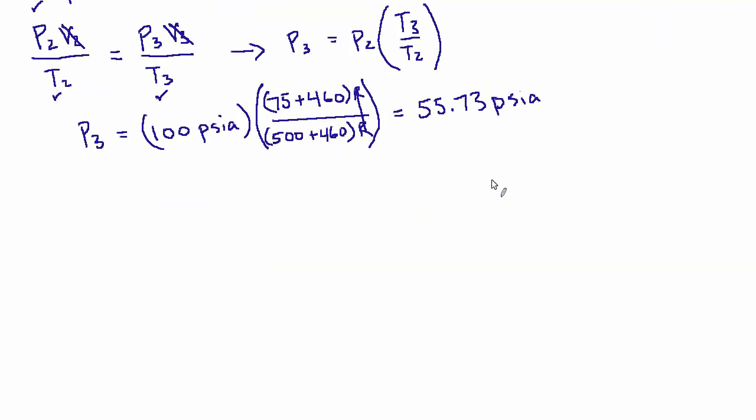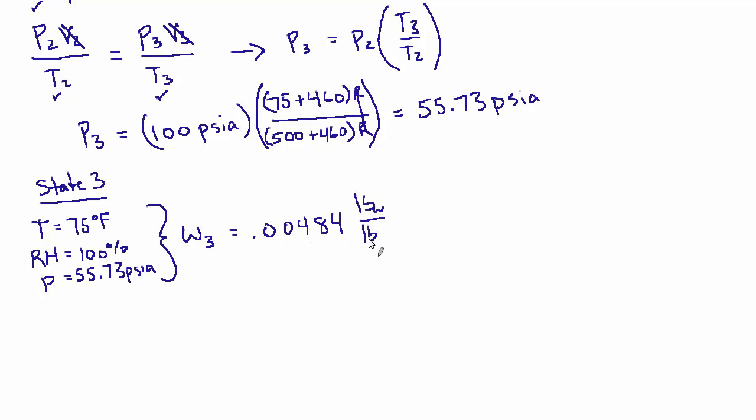So now what do we know about state three? We know three things. And I'm going to do what I did before and use those three things to use the psychrometric calculator and get the answer first. And then we'll do it some manual way. So after we get an answer, we can check it against what the psych calculator said. So let's restate what we know about state three, 75 degrees Fahrenheit, a relative humidity of 100% because it's saturated. And we just found the pressure to be 55.73 PSI. So based on those three facts, we can plug it in and get the humidity ratio, which is 0.00484 pounds of water per pound of dry air.